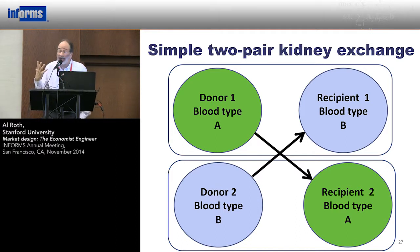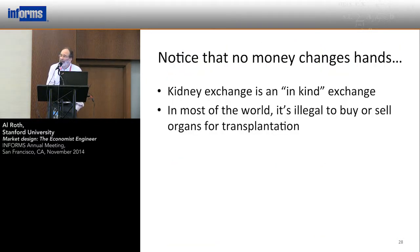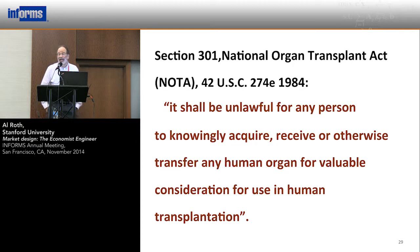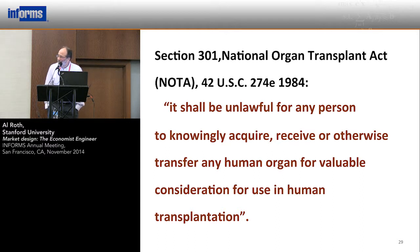In this example it would allow two more transplants to happen than would otherwise happen, because two donors who would otherwise be sent home saying 'you're incompatible with your patient' now get to give a kidney that allows the person they love to get a kidney as well. No money changes hands — this is an in-kind exchange, because in most of the world it's illegal to buy or sell organs for transplantation. There is a legal market in the Islamic Republic of Iran but pretty much nowhere else. The 1984 National Organ Transplant Act says it's unlawful to acquire, receive, or otherwise transfer any human organ for valuable consideration for use in human transplantation. But an amendment gotten in 2007 and a memo from the Justice Department say that kidney exchange, while it might look like valuable consideration, is not what the law intends to forbid. So kidney exchange is legal in the United States.